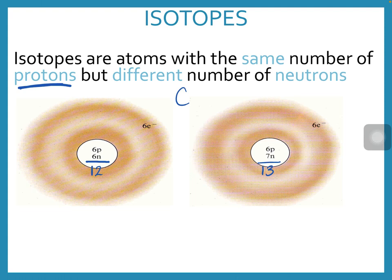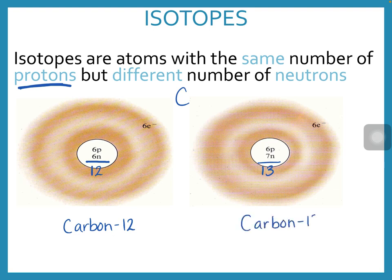The way we identify which type of carbon isotope we have is with its mass. The first atom I would call carbon-12 and the second one carbon-13. These are two different isotopes of carbon.